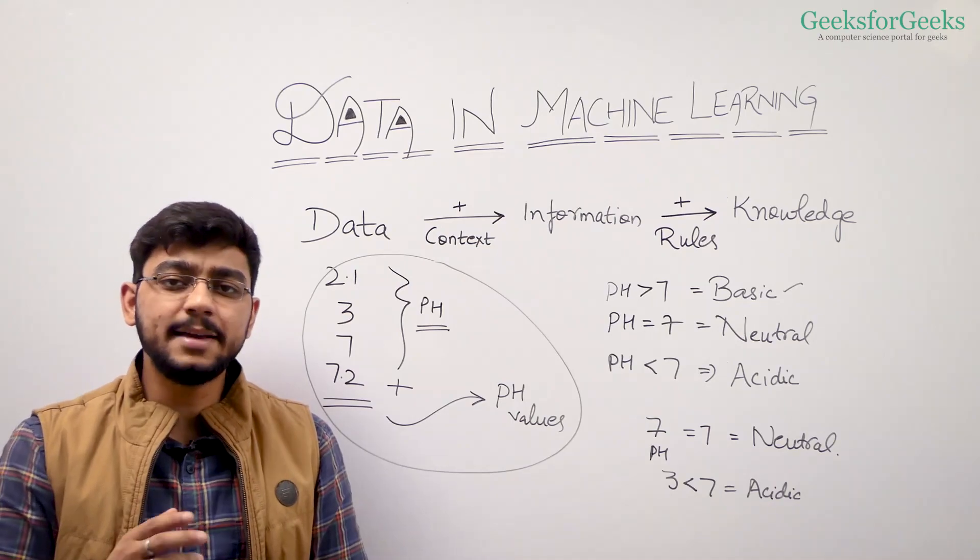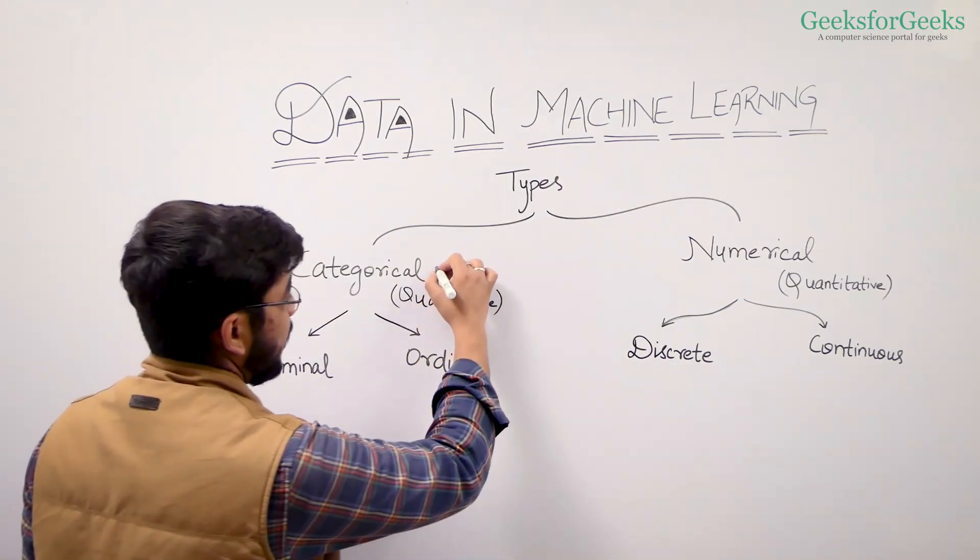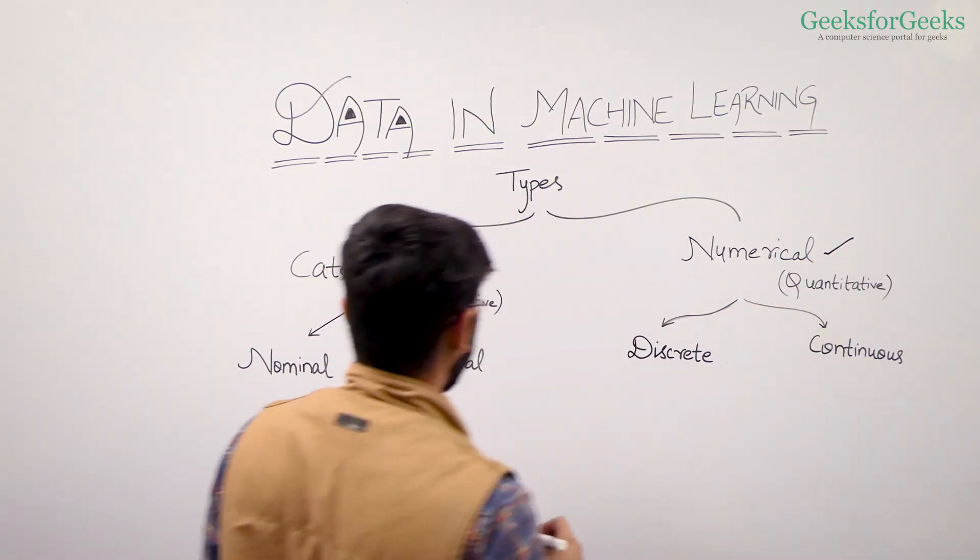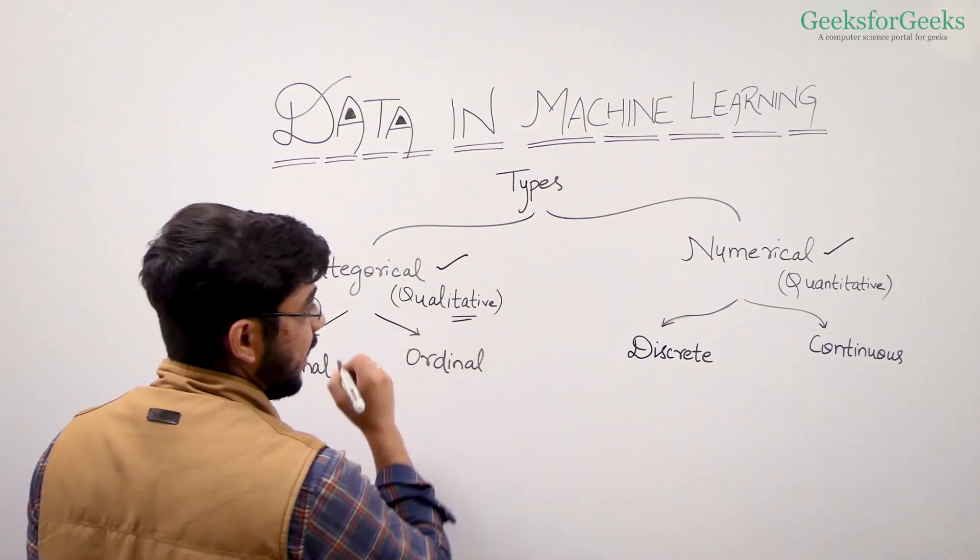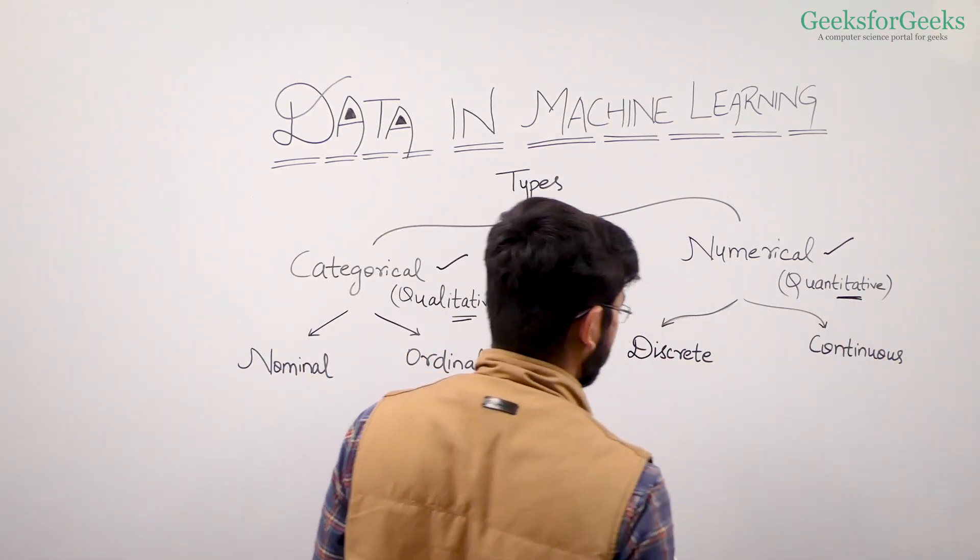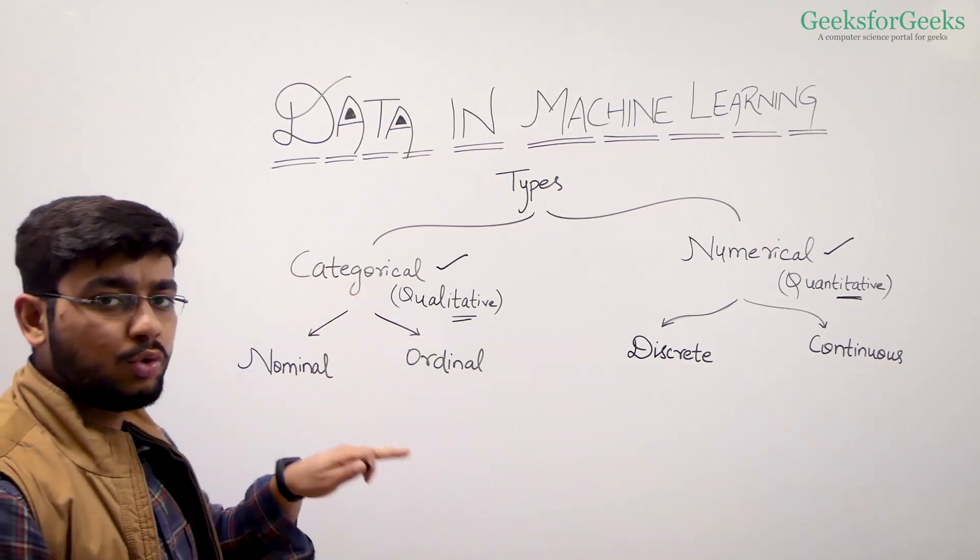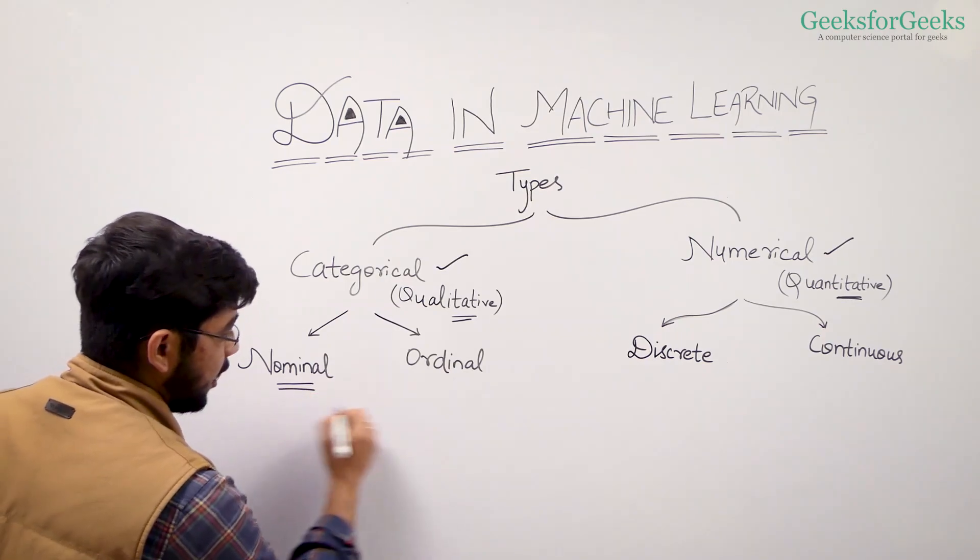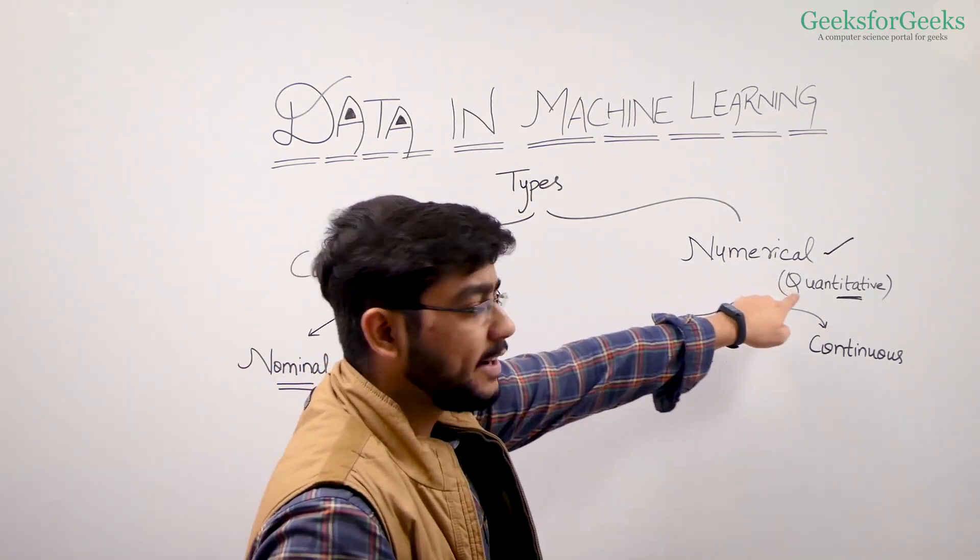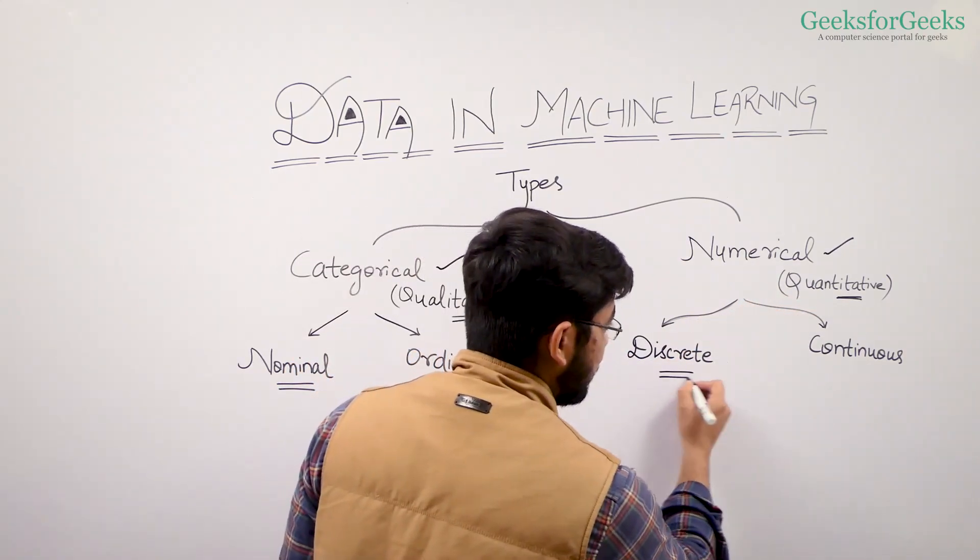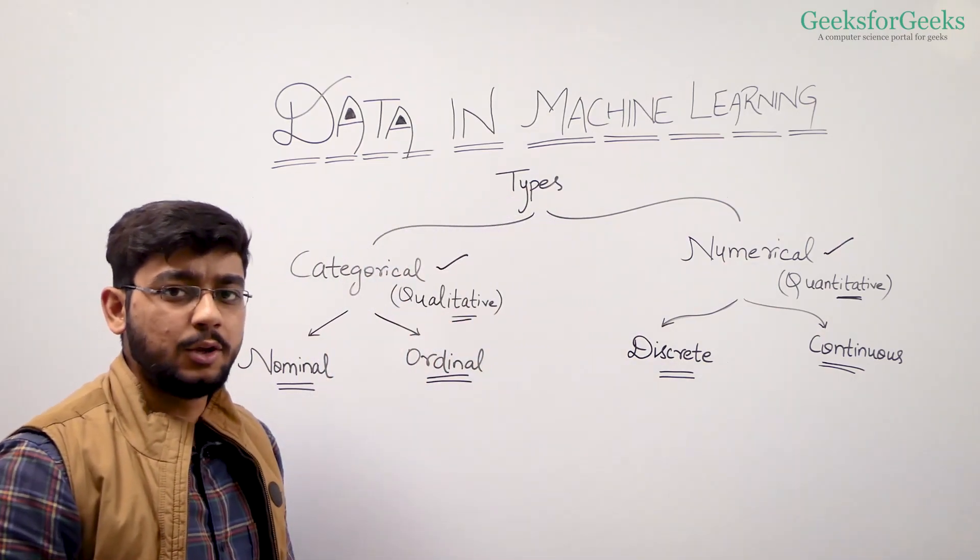Broadly, we have two types of data: categorical data and numerical data. Categorical data is also known as qualitative data, and numerical data is known as quantitative data. If we further divide categorical data, it has two subtypes: nominal data and ordinal data. And the numerical data has two types: discrete data and continuous data. Let's talk about each of these terms individually.